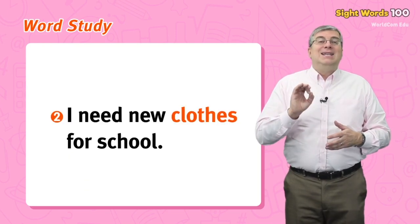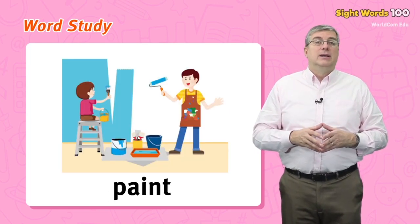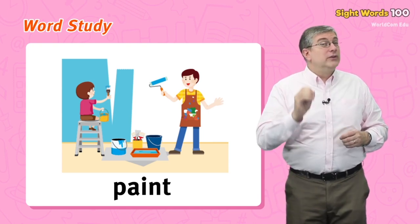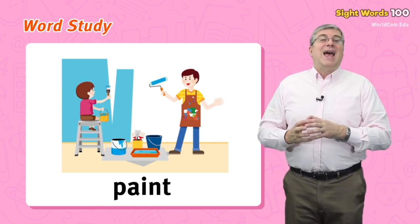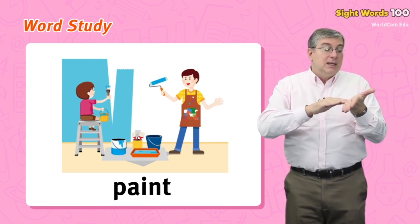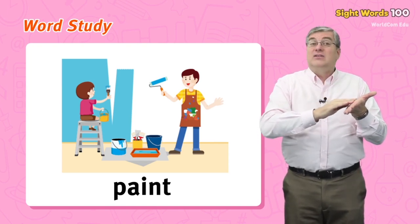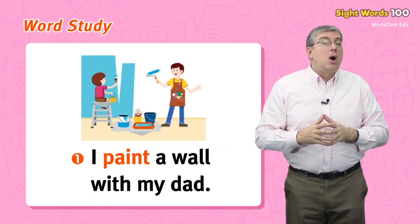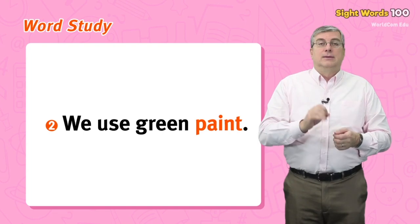Next, the word paint can be an action or a thing. Paint as a thing is a colored liquid that you put on something to change its color. When you do that, the action is also called paint. For example, I paint a wall with my dad, or we use green paint.